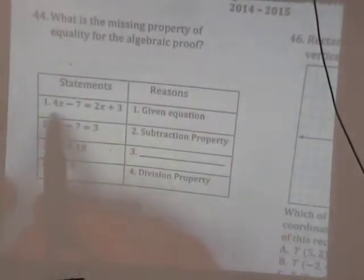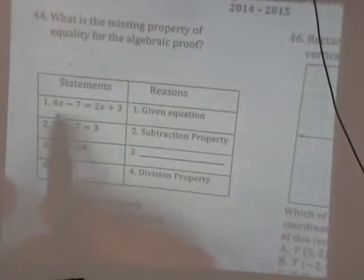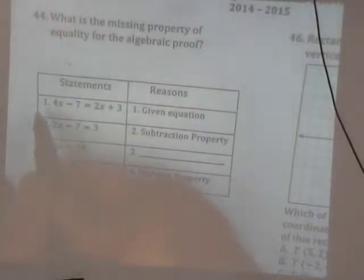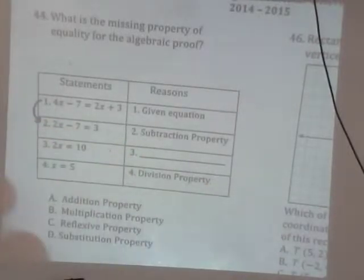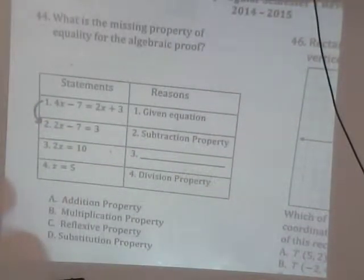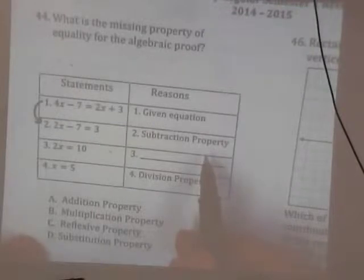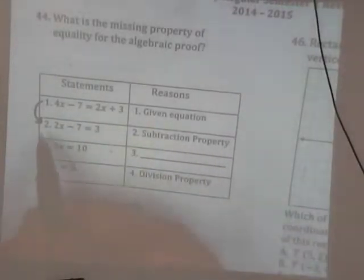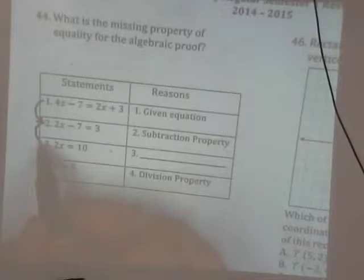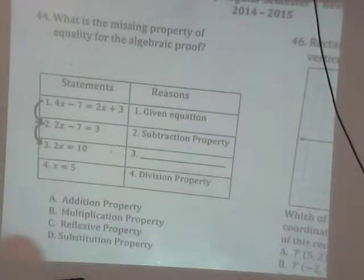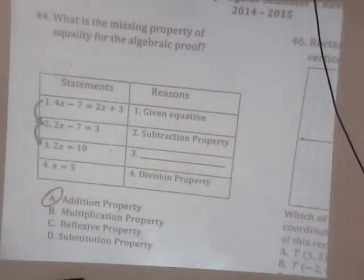The missing property of equality for the algebraic proof. Alright, so we start out with this. That's given to us. What do they do to get from statement one to statement two? What do they do? They minus 2X to both sides, right? Yeah. So that's where this subtraction property comes in. They went from here to here by using this subtraction property. So look at statements two to statement three. What do they do? Add seven to both sides. They added seven to both sides. So what do you think it would be? Addition property. Addition property. Very good.